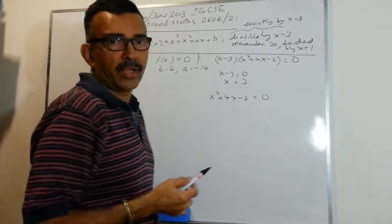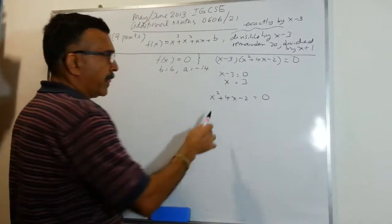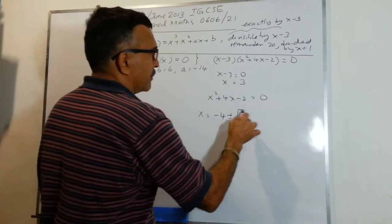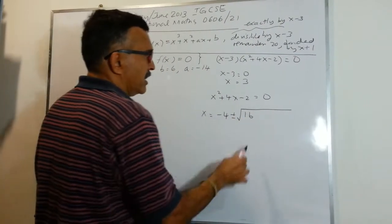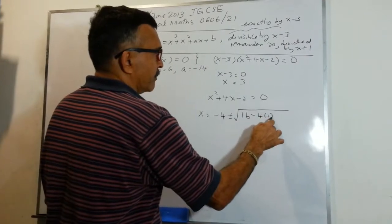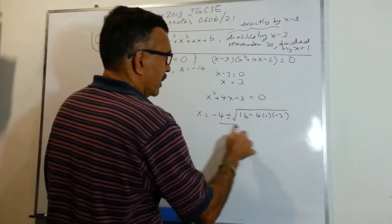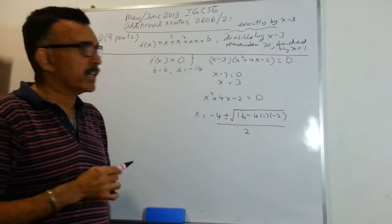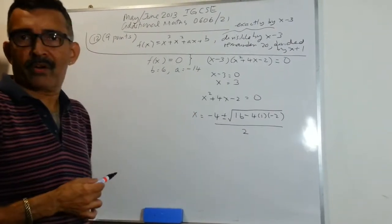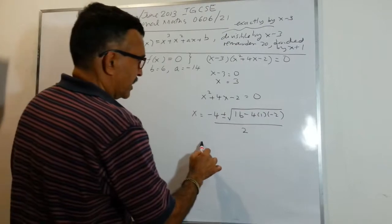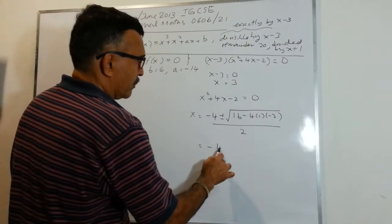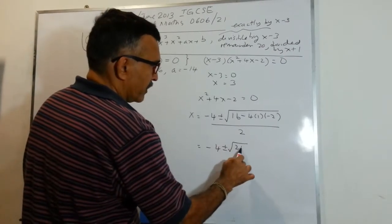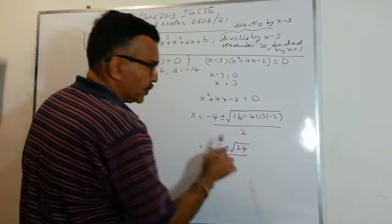So let's deal with x squared plus 4x minus 2 equals to 0. Using the quadratic formula, we have x equals to minus 4 plus or minus the square root of b squared — which is 16 — minus 4ac, all over 2a. This ends up being minus 4 plus or minus the square root of 16 plus 8, which is 24, over 2.